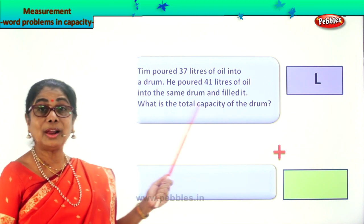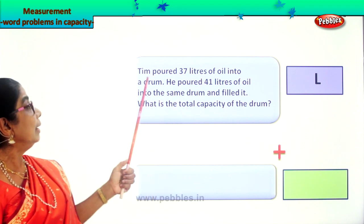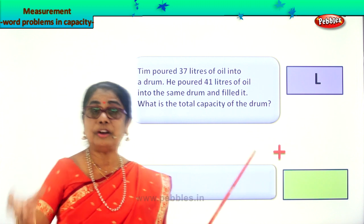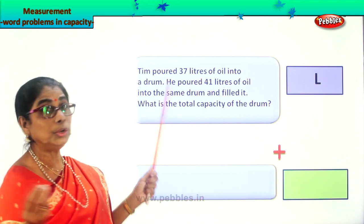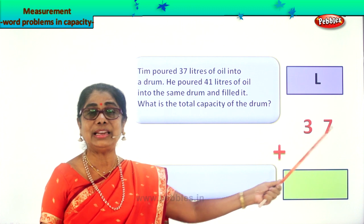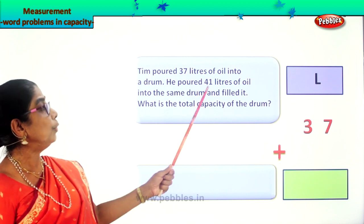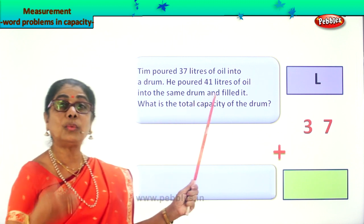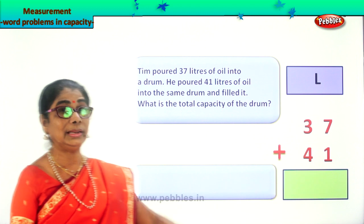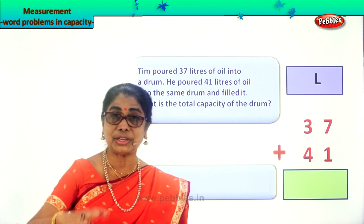What is the total? When you get the word 'total,' you know you have to add. Now, what is the quantity of oil poured into the drum? 37 liters of oil — so we write down 37 liters as the first quantity Tim poured into the drum. Next, he poured 41 liters of oil — that is the quantity of oil poured for the second time into the same drum: 41 liters.